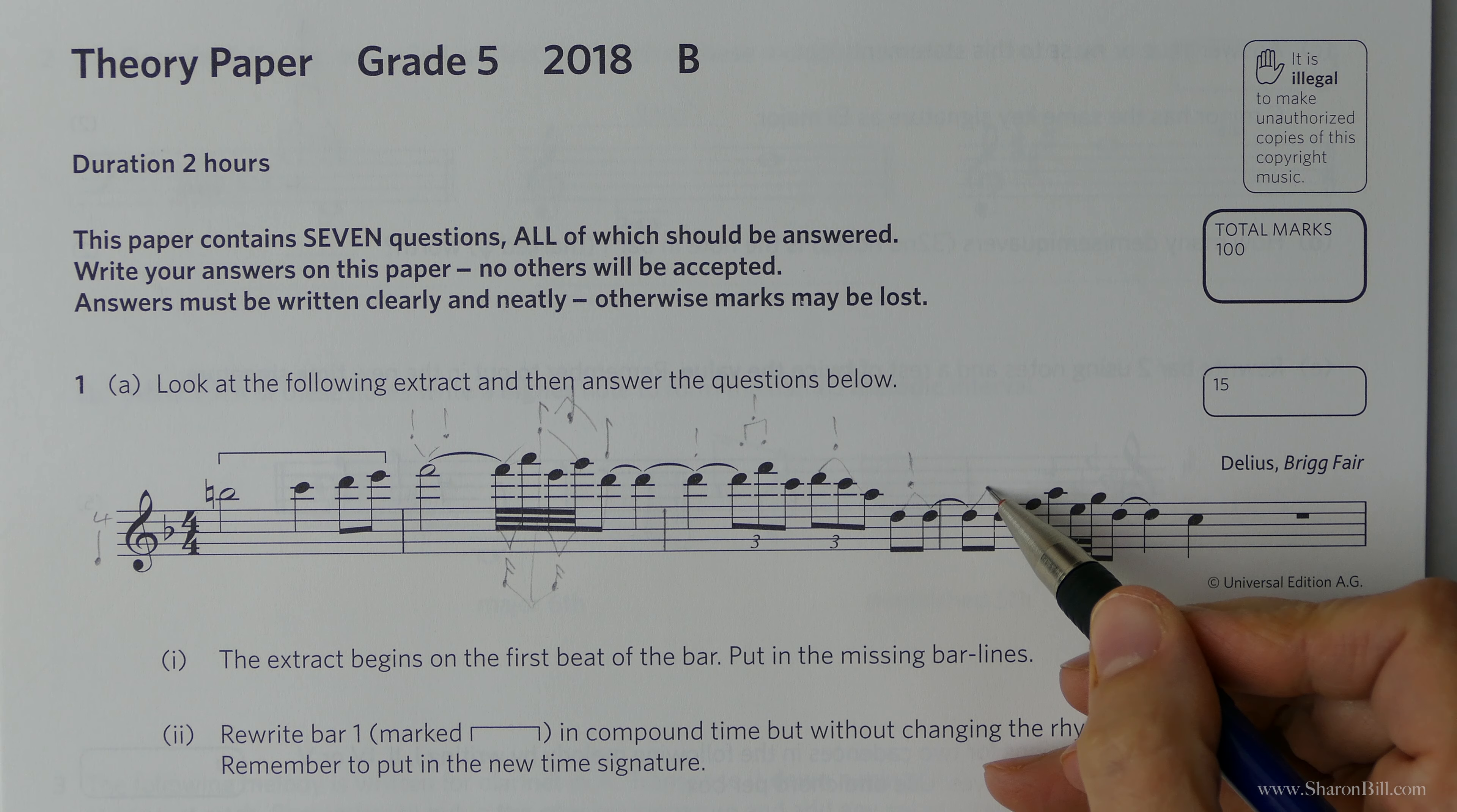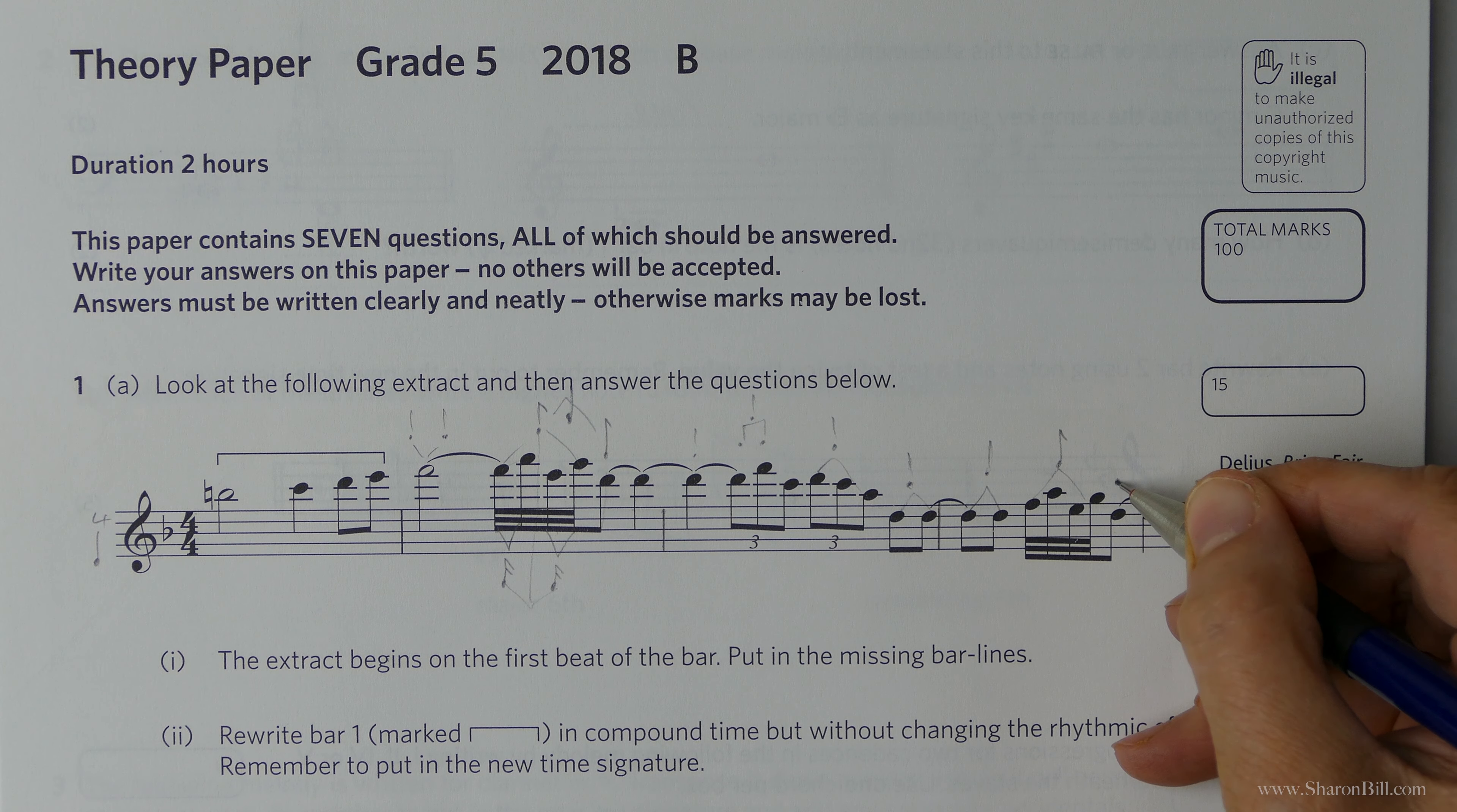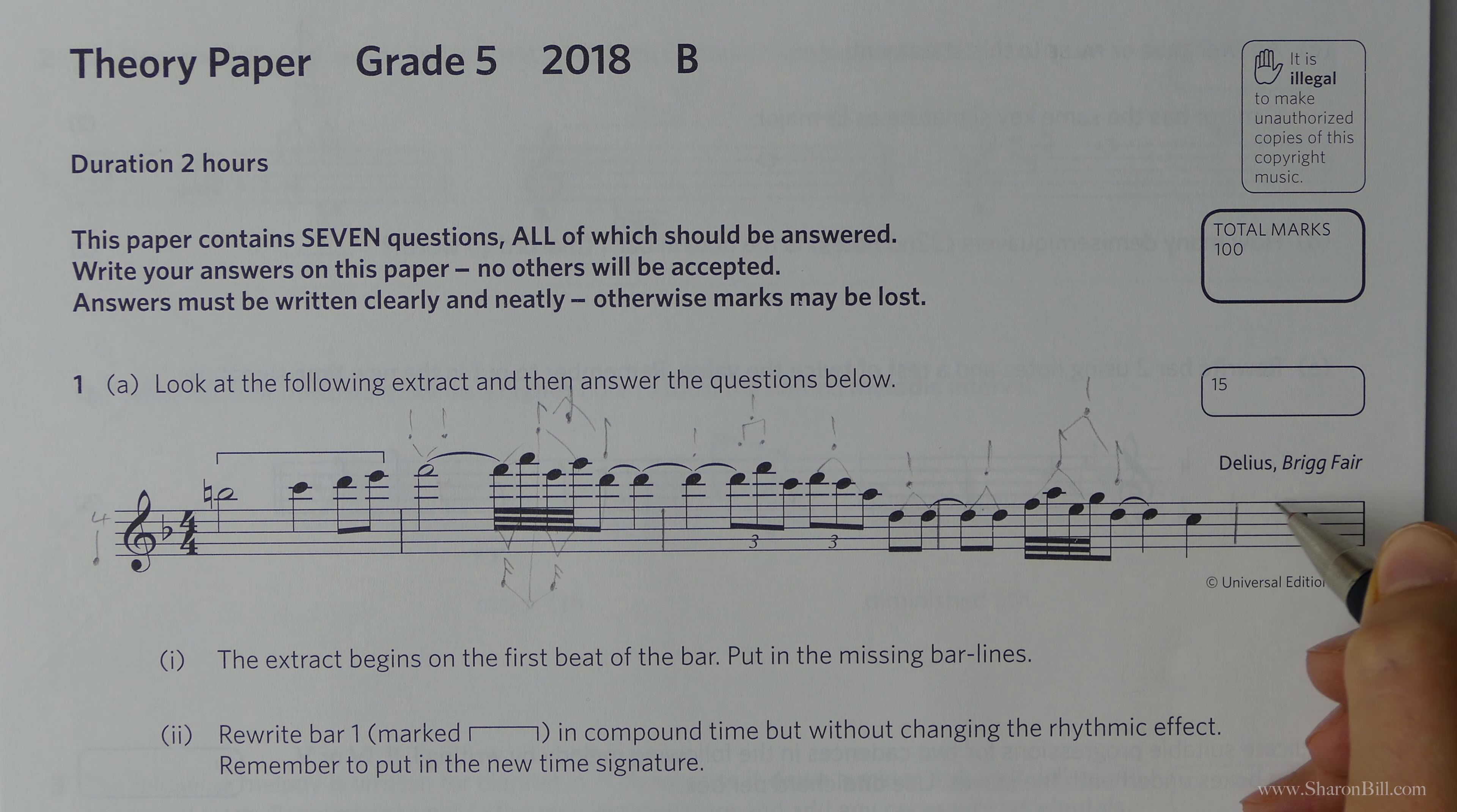And then 2 quavers, 2 8th notes give us a crotchet, a quarter note. 4 32nd notes or 4 demi-semiquavers, we've worked out, here gives us a quaver or an 8th note. There's our other quaver 8th note to make the crotchet beat. 1, 2, there's beat 3, there's beat 4, and then bar line. And then there's a whole note, semi-breve rest.